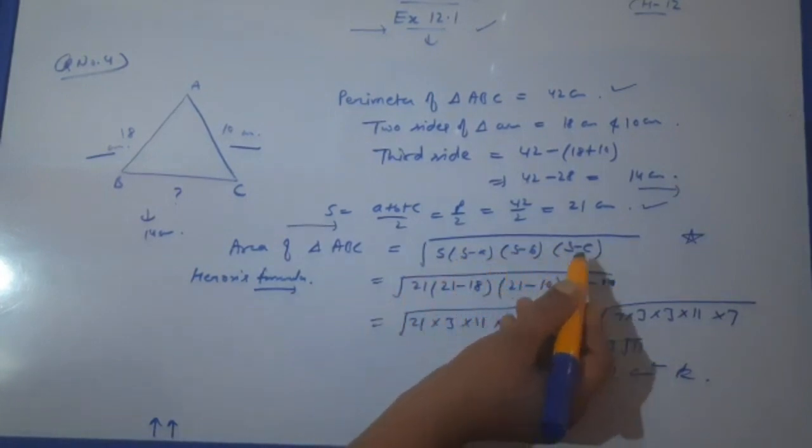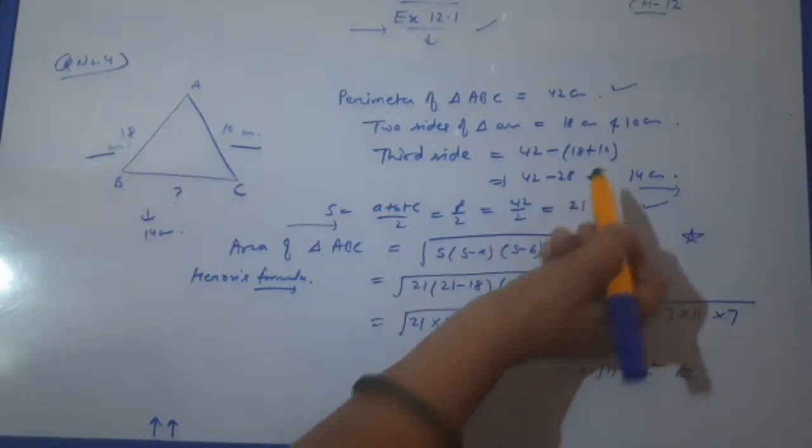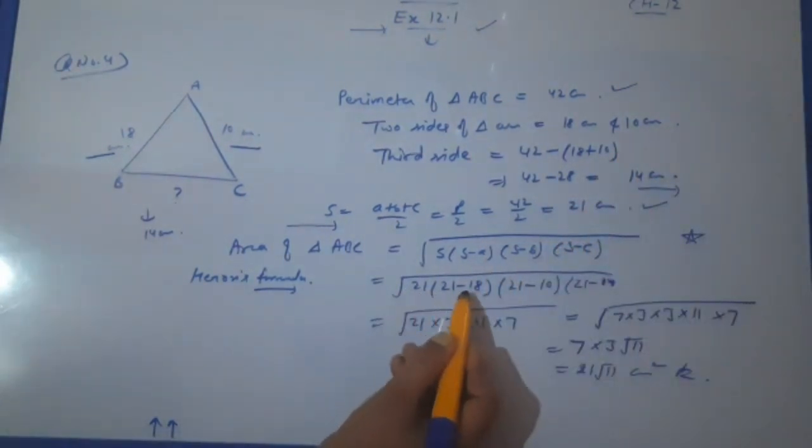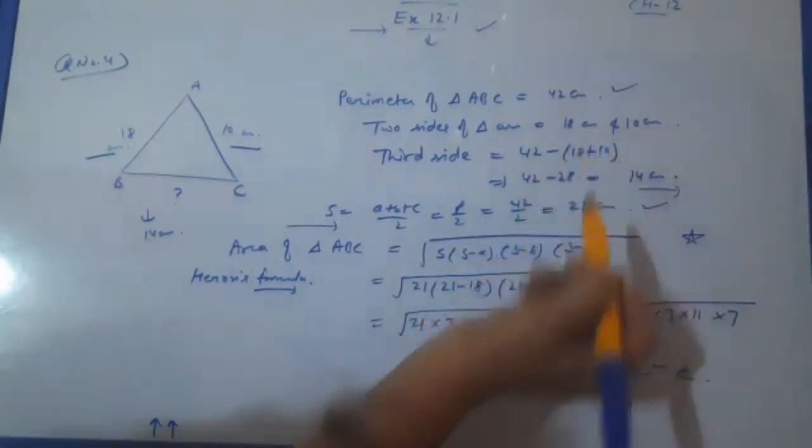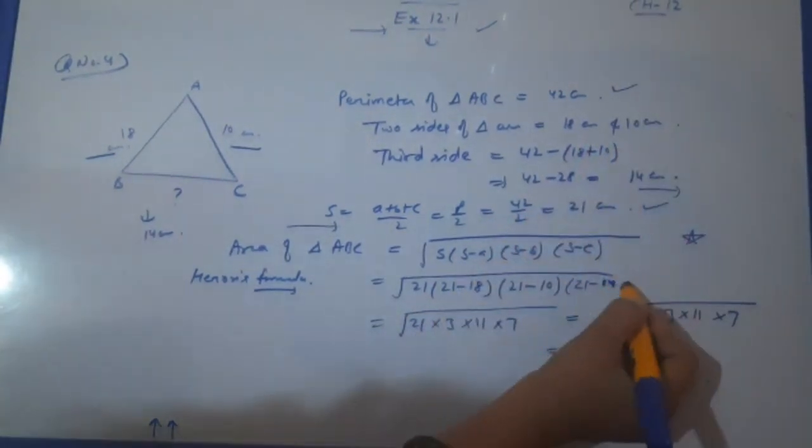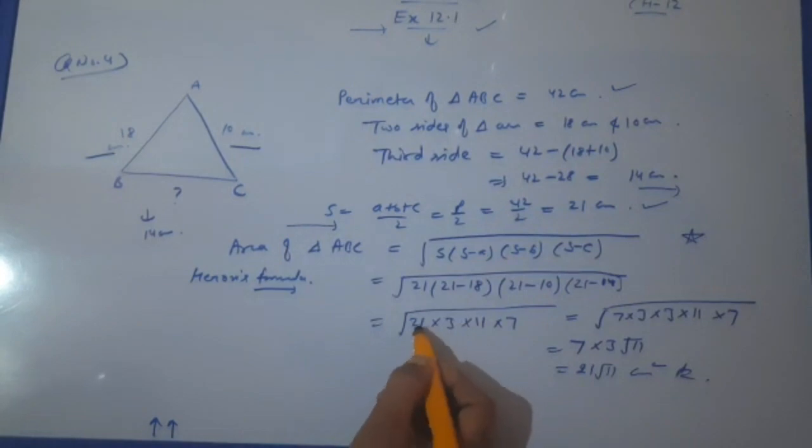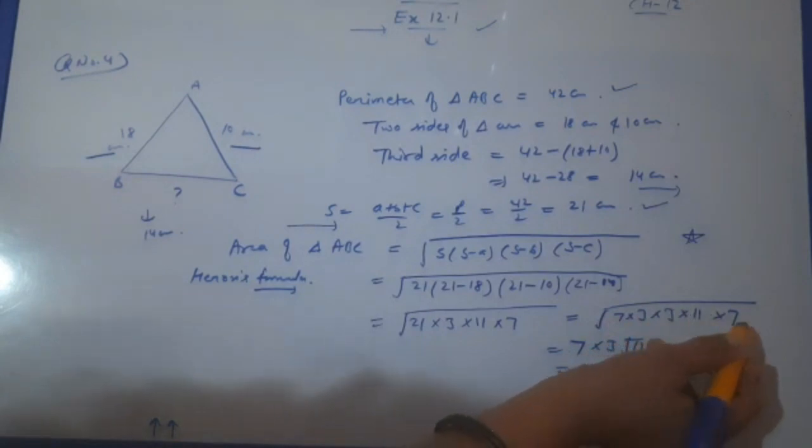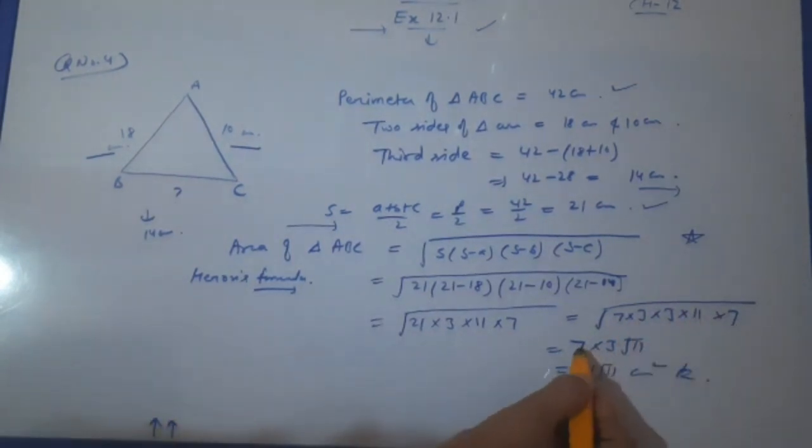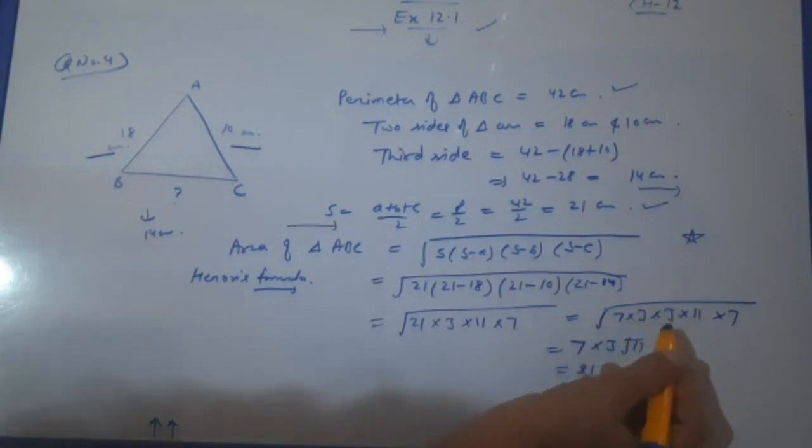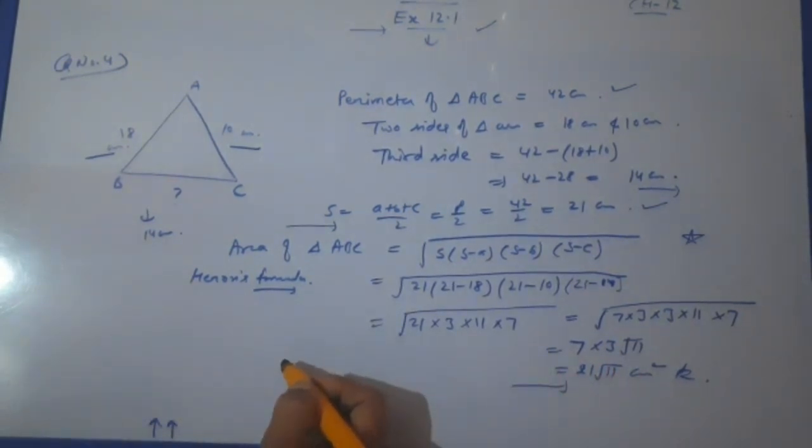S into (S minus A) into (S minus B) into (S minus C) under the root. S was 21. 21 into (21 - 18), first side, then second side 10, and then third side 14. After subtracting: 21 × 3 × 11 × 7. Break this: 7 × 3 × 3 × 11 × 7. Two 7s, so one 7 out. 3, 3 two times, then one 3 out. So we are getting 21 root 11. This is our area of the triangle with the help of the Heron's formula.